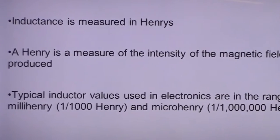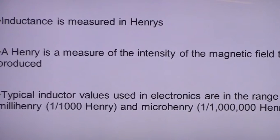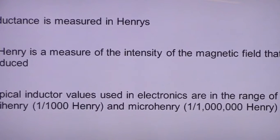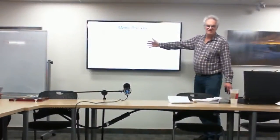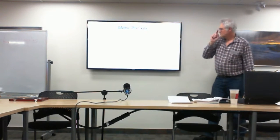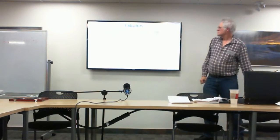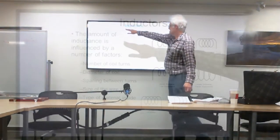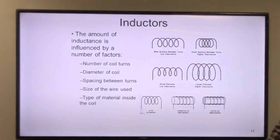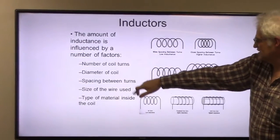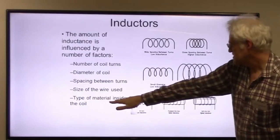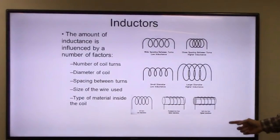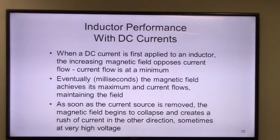Inductance is measured in henries — henries measure the intensity of the magnetic field produced. Typical values are millihenries or microhenries; one henry is unusual. The factors that influence the value of inductance — and this was on the exam — are: the number of coil turns, the diameter of the coil, the spacing between the turns, the gauge of wire used, and the type of material inside the core, whether air, powdered iron, or laminated iron.